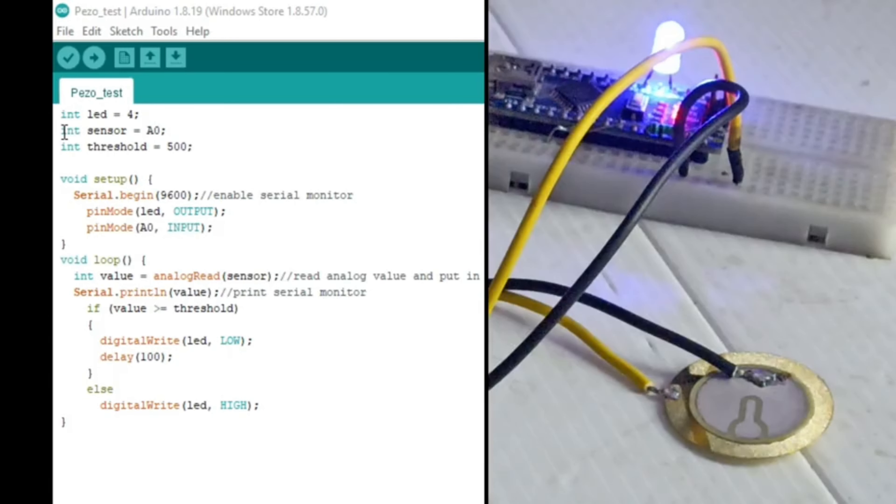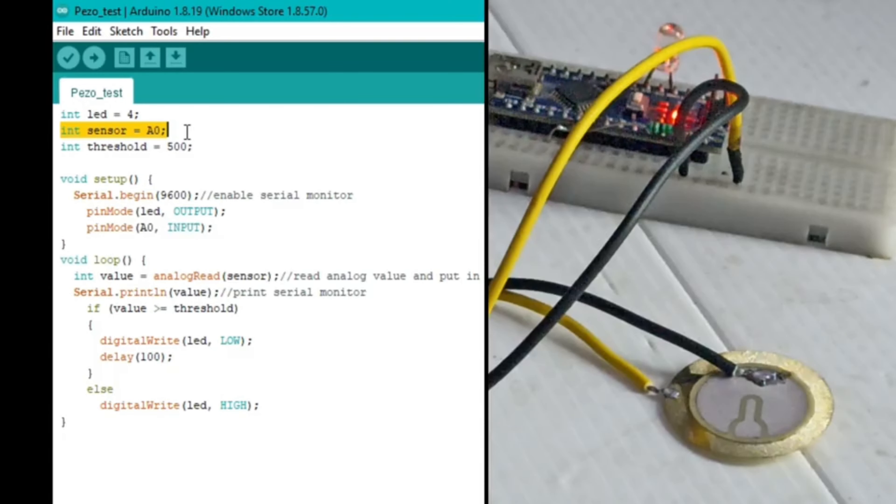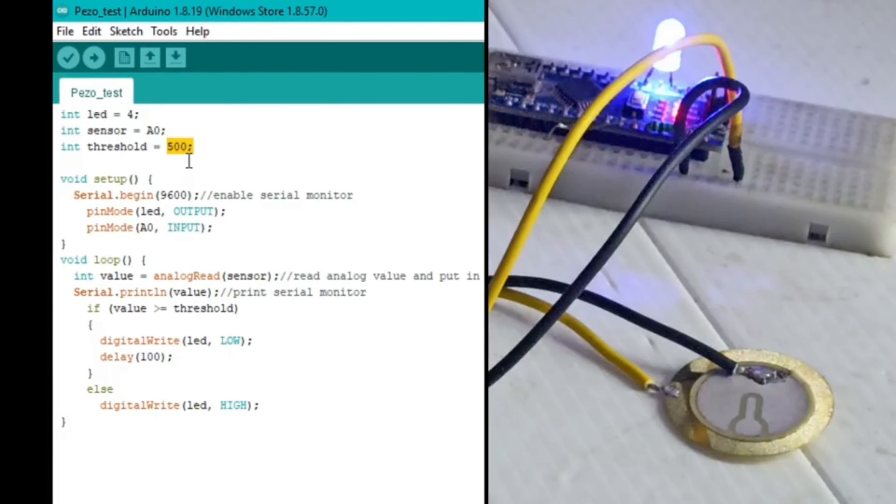Okay so now it's time to upload the code. Open up Arduino IDE and open this input code. First of all we have declared the D4 pin as the LED as output pin. Then we have connected the sensor pin to A0 analog pin. Then we have declared a threshold value. Here we have taken 500, you can take any number like 600, 700, whatever you want.